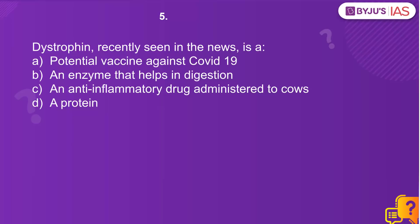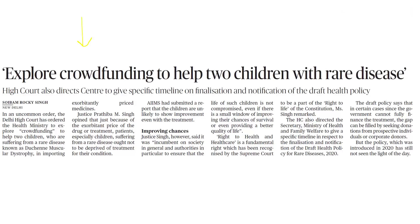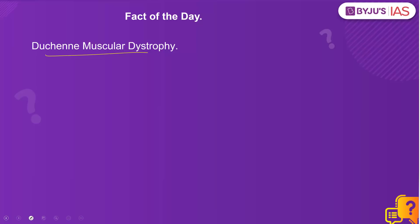Now let's look at question number five on Duchenne muscular dystrophy, recently seen in the news. The context: the High Court in Delhi has ordered the Health Ministry to explore crowd funding to help two children who are suffering from this rare disease known as Duchenne muscular dystrophy.